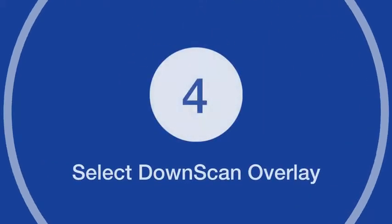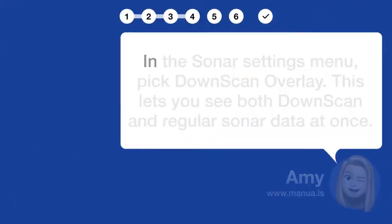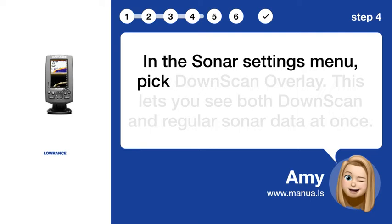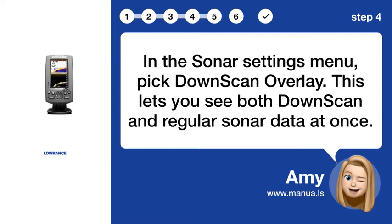Step 4: Select downscan overlay. In the sonar settings menu, pick downscan overlay. This lets you see both downscan and regular sonar data at once.